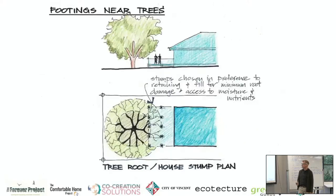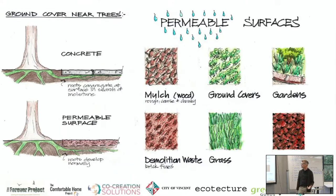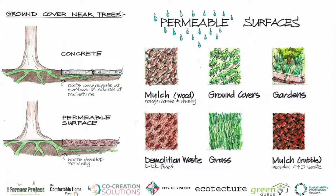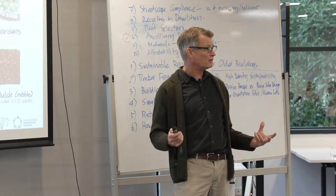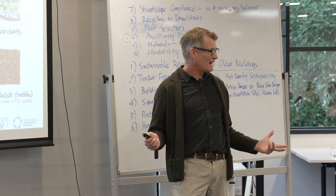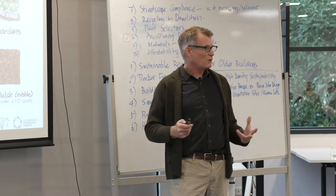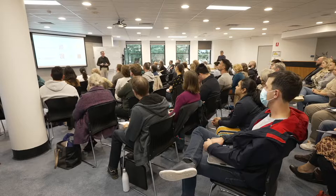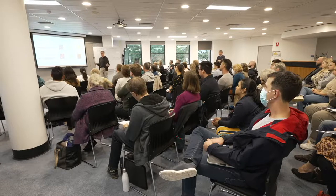For footings near trees, use lightweight timber stumps rather than concrete, for the obvious reason of maintaining nutrients and water access to the tree root zone. Finally, use permeable surfaces near root zones — avoid concrete and use one of the many fantastic alternatives that allow our magnificent trees to survive. A lot of this is pretty basic, but it can really transform the environments we live in.